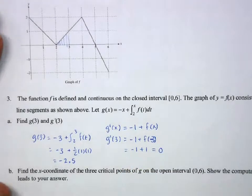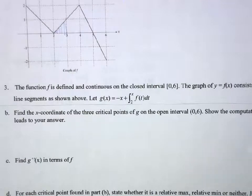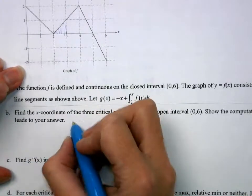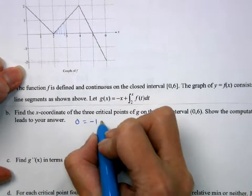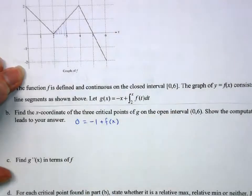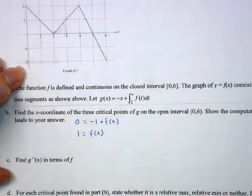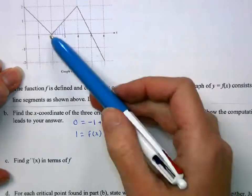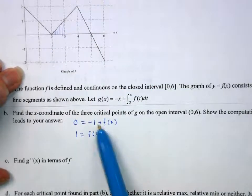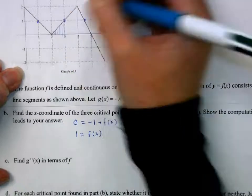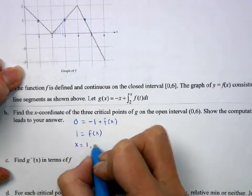Find the three critical points of g on the open interval 0 to 6. Critical points are when g prime equals 0: negative 1 plus f of x equals 0, so we look for where f of x equals 1. That's at x equals 1, x equals 3, and x equals 4.5.